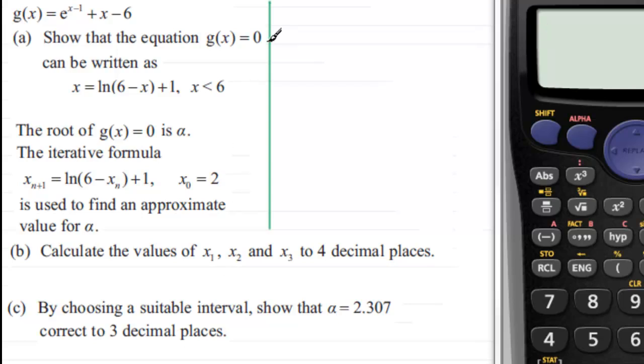Okay, let's see how you got on. Well first of all then, let's just start with when g(x) equals 0. When g(x) equals 0, we've got our equation which is e to the power x minus 1 plus x minus 6 equals 0.